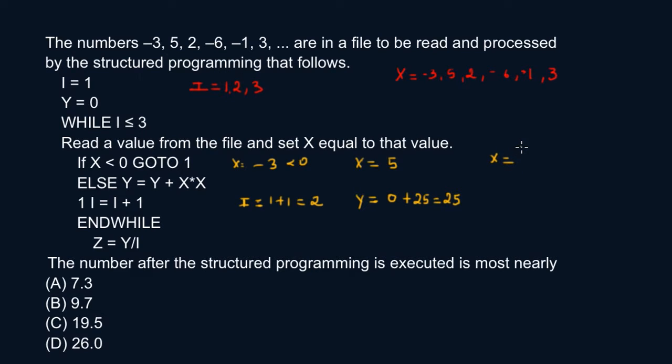X is equal to two. Two is not less than zero, so else, this is what I'm going to solve. Y is going to be Y plus X times X. So Y, my latest value for Y is 25 plus two times two, that's four. So I have 29.